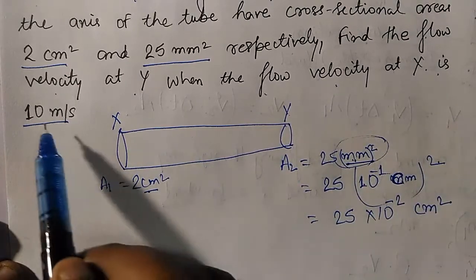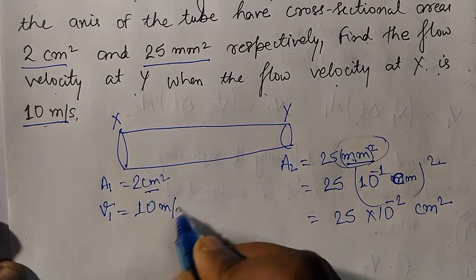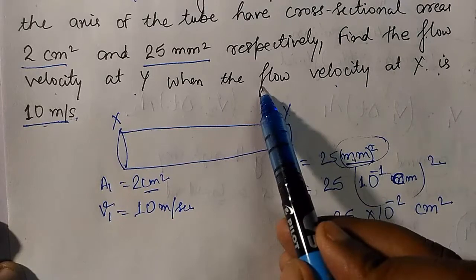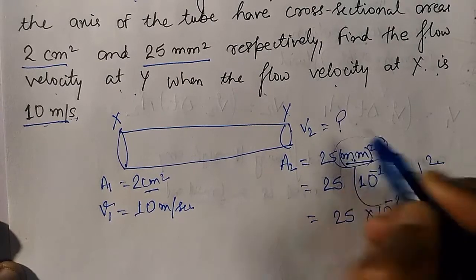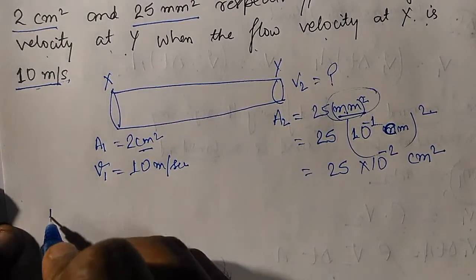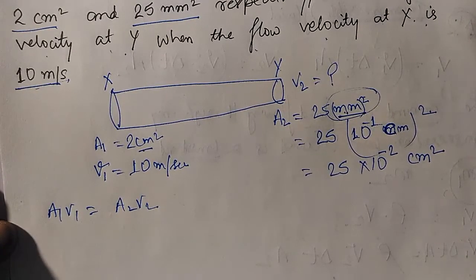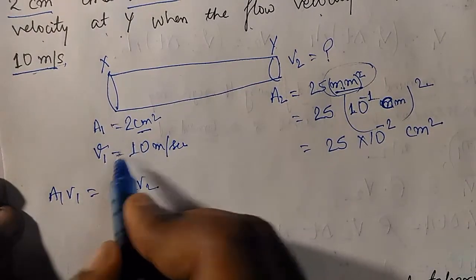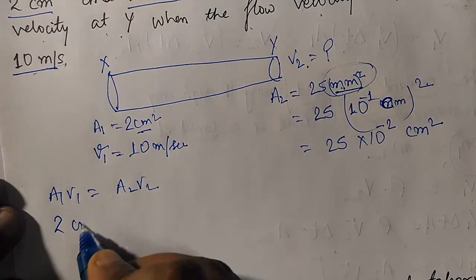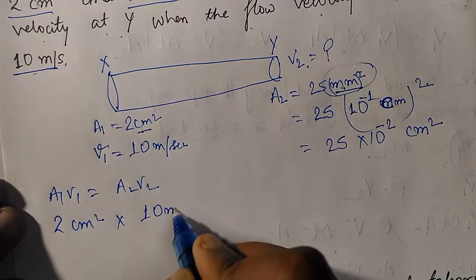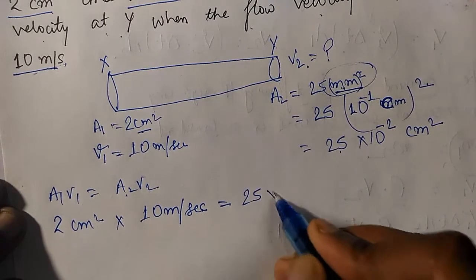Flow velocity at x is 10 m/s. We need to find the flow velocity at y. Using the equation of continuity: A1·V1 = A2·V2. Here A1, V1 at point x, and A2, V2 at point y. So: 2 × 10 = A2·V2, where A2 is 25 × 10⁻² cm².